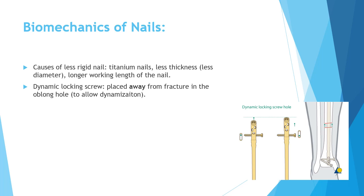To apply a screw in the dynamic mode, you place it away from the fracture — in the upper part of the hole in this example. As the patient starts moving and bearing weight, the fracture will collapse by the nail moving up. The screw does not move — what moves is the whole nail. So the screw's position within the hole changes from the upper part to the lower part. After collapse, the screw will be close to the fracture, in the lower part of the hole.